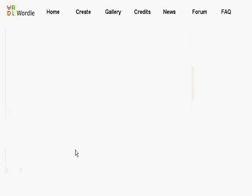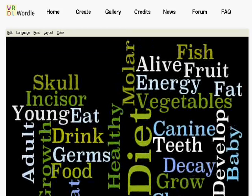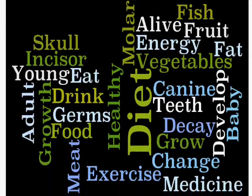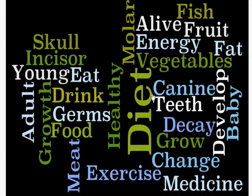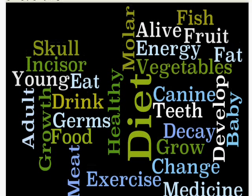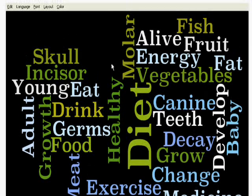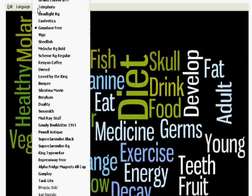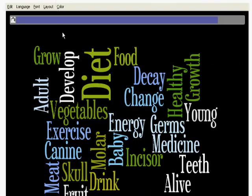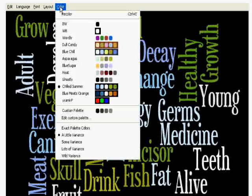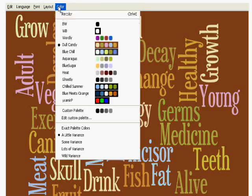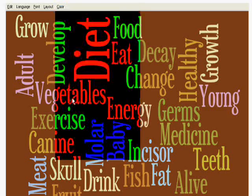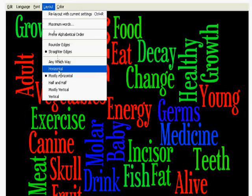When I click go, here I've got my keywords all laid out in a nice graphical format. I can do lots of things here — I can change the font, I can also change the colours, and I can change the layout.